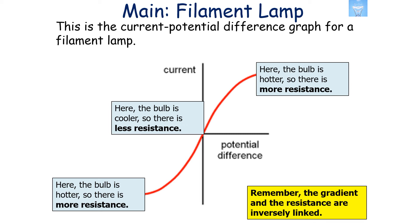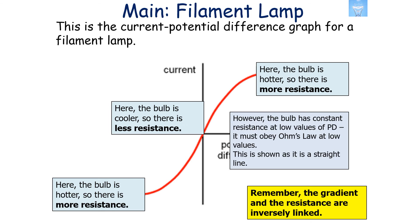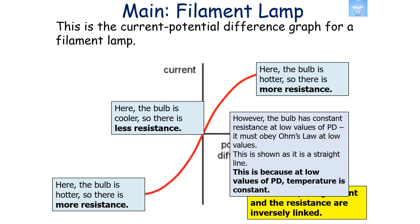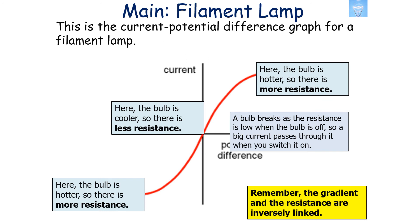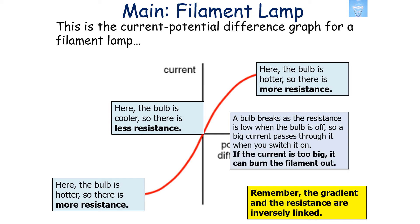On either side, when the potential difference increases, the bulb is hotter, so there's more resistance. The bulb has a constant resistance at low values of potential difference, so it obeys Ohm's law at low values, shown as a straight line. At low values of potential difference, the temperature is constant. It's important to note that a bulb is at risk of breaking because the resistance is low when the bulb is off — so a large current passes through it when you switch it on, and if that current is too large, the filament can burn out.